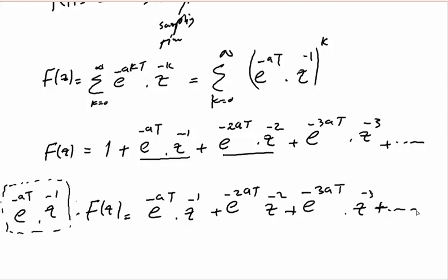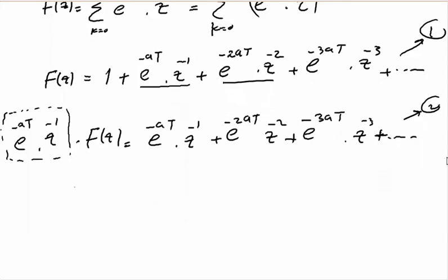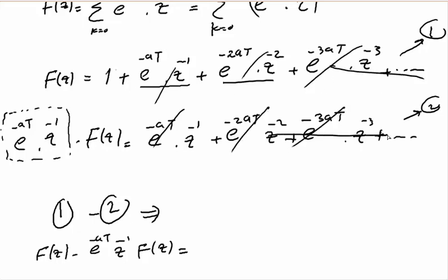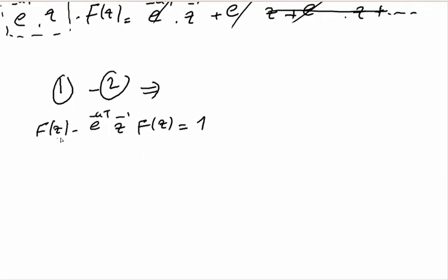Let us call the original series equation (1) and the multiplied series equation (2). Subtracting equation (2) from equation (1), all the terms cancel except the first term, leaving: F(z) minus e^(-aT)z^(-1) times F(z) equals 1. Factoring out F(z): F(z) times [1 minus e^(-aT)z^(-1)] equals 1.